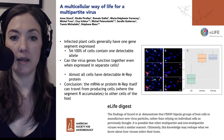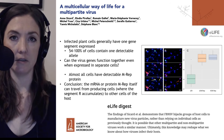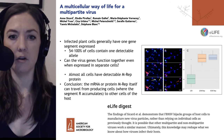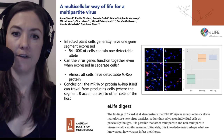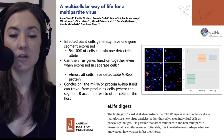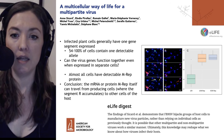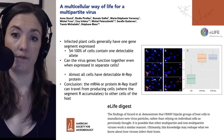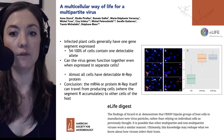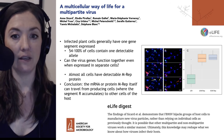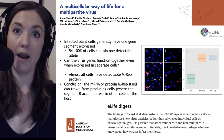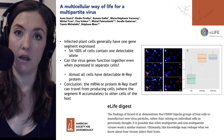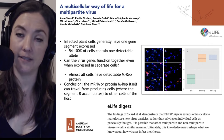This was summarized by an eLife Digest — a short summary accompanying the article. The Digest authors stated that the findings of Descartes et al. demonstrate that FBNSV hijacks groups of host cells to manufacture new virus particles, rather than relying on individual cells as previously thought. This is important because it may pertain to how other multipartite viruses conduct their lifecycle as well.